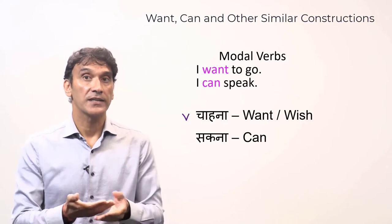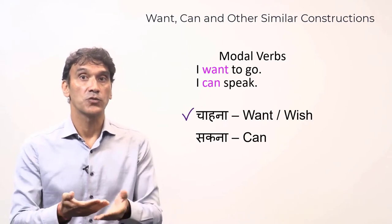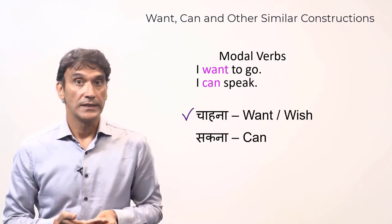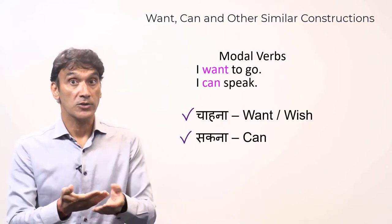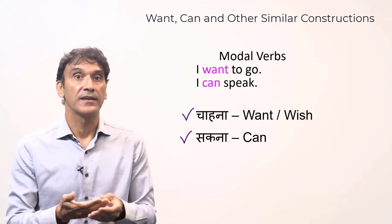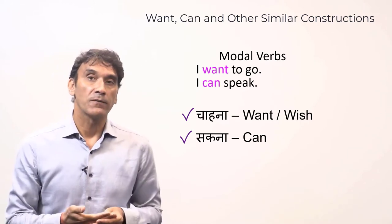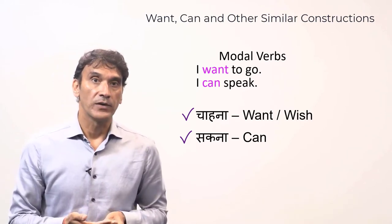In Hindi, chahana is a model verb. It means to wish, to want. Sakna is also a model verb — it means can. Let's take these model verbs one by one.